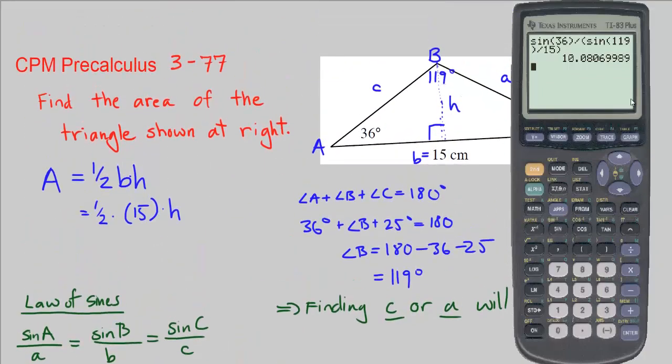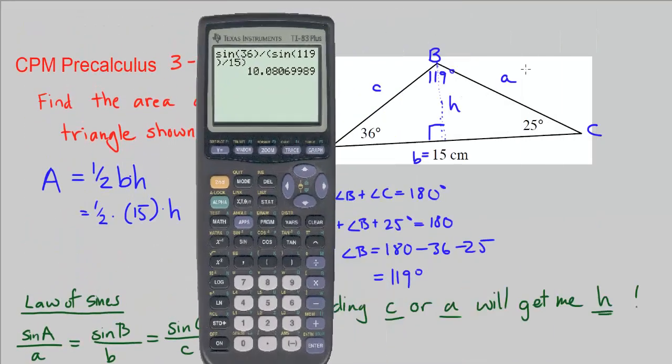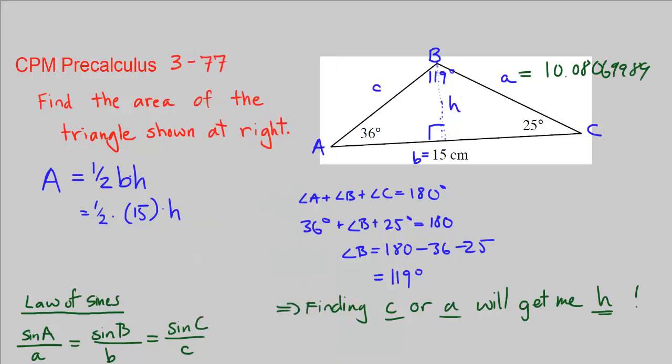So why did I want side a? a is equal to 10.08069989. Put away the calculator for a second. Because now I can look at splitting this here with the height, and I can look at this right triangle here. If I create this right triangle,